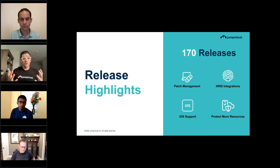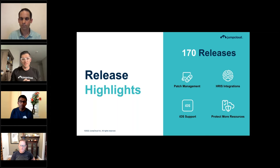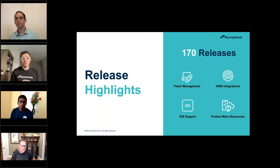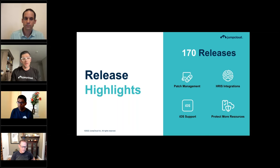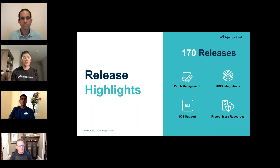Before we dive into all the amazing stuff heading your way, I wanted to do a quick recap of all the things that we've delivered within the first half of the year. We had over 170 releases, including everything you can touch and see within the JumpCloud platform, as well as everything under the hood to ensure it's a secure and resilient platform. Highlights include patch management, HRS integrations for smooth onboarding, iOS support, and extending JumpCloud Protect across more resources.